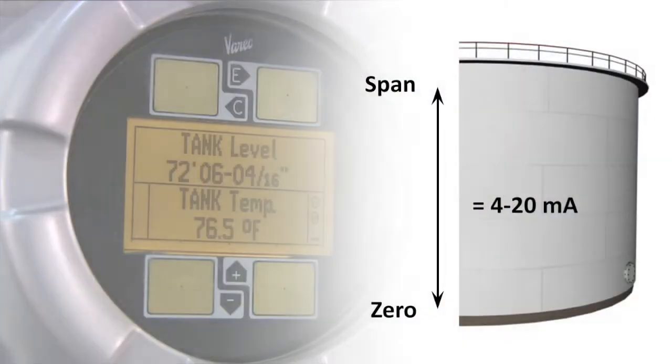Zero and span allow you to set the minimum and maximum levels respectively of product in the tank. Zero and span set the 4 and 20 milliamp inputs.